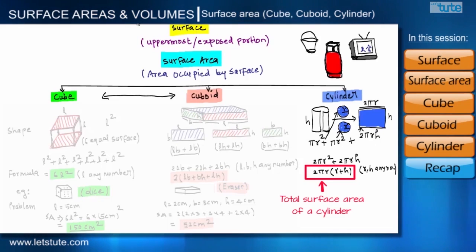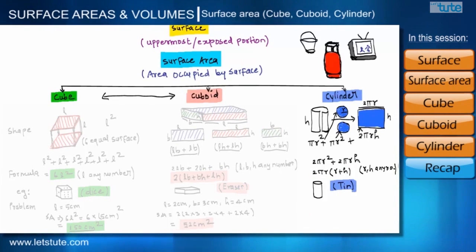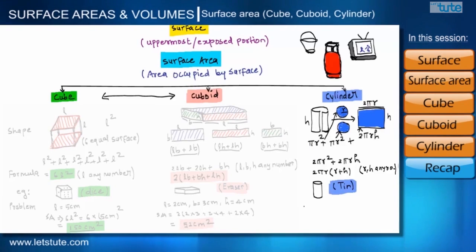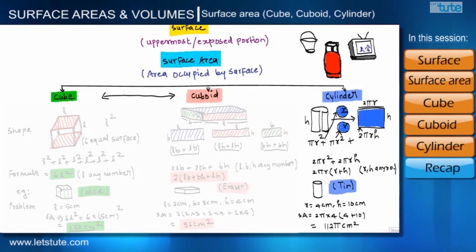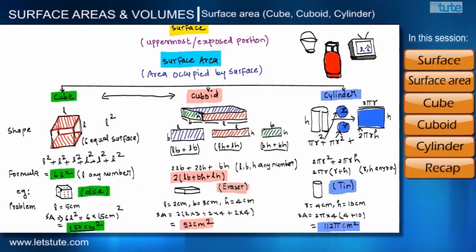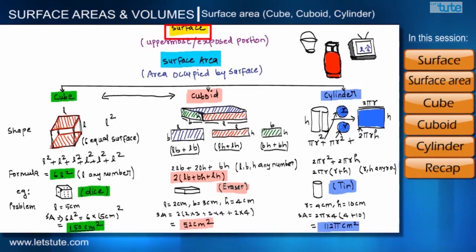A coating tin is the best example of a cylinder. Let us find the total surface area of a tin having radius R = 4 cm and height = 10 cm. The total surface area of this tin would be 112π cm squared.